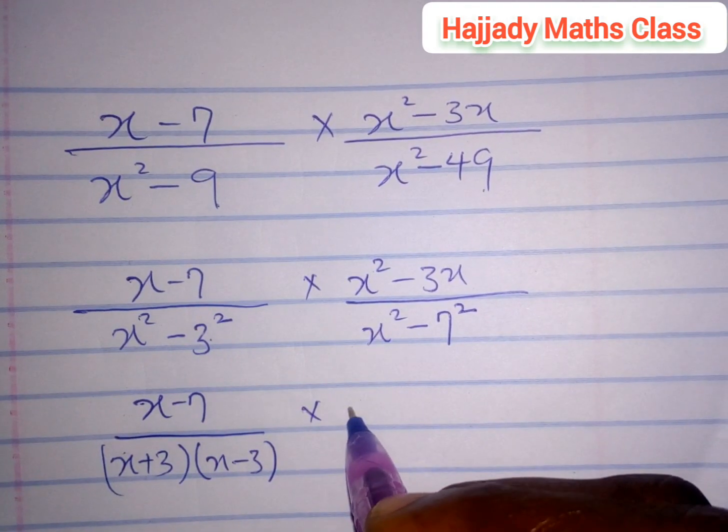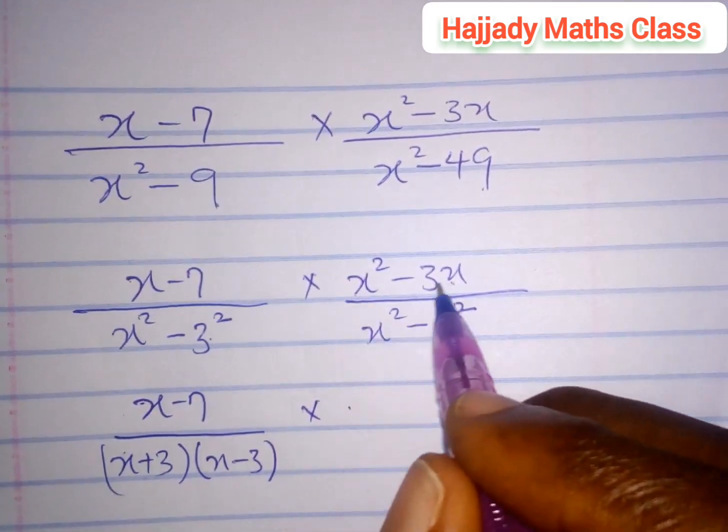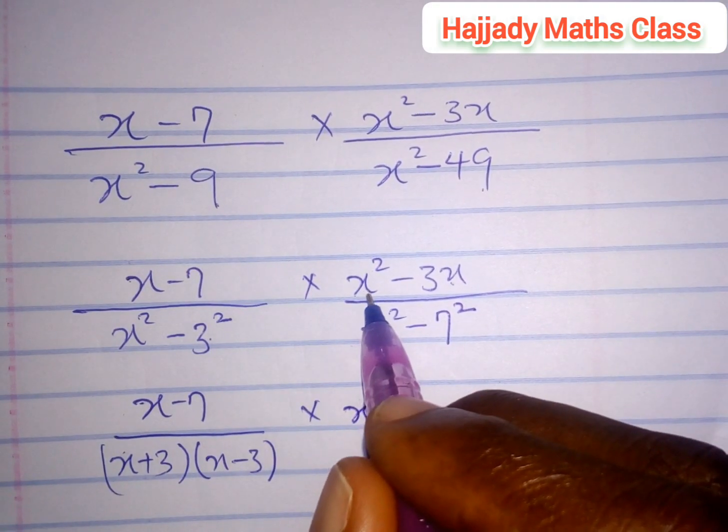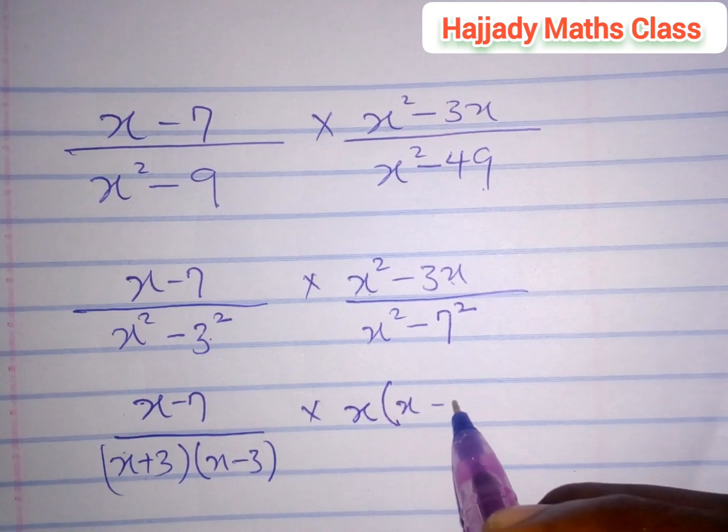Looking at this, x can be factorized. We have x being factorized out. Here we are left with x(x - 3).